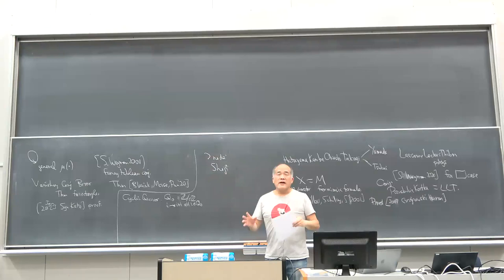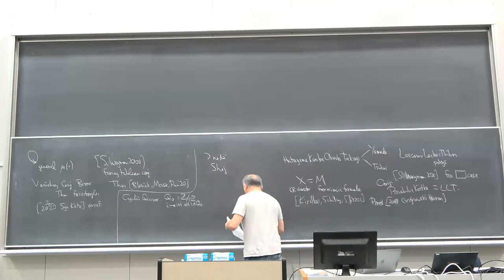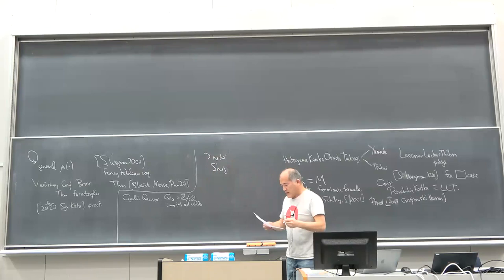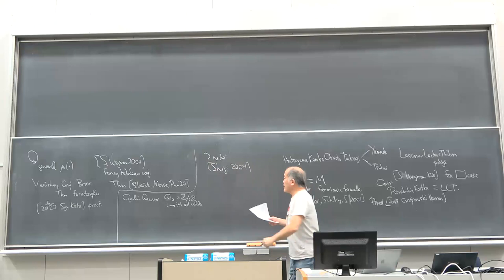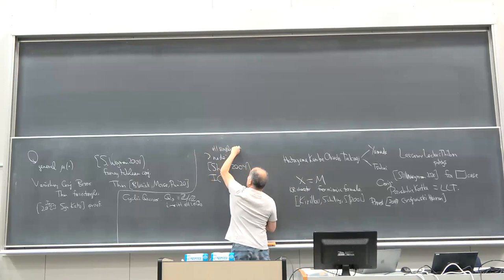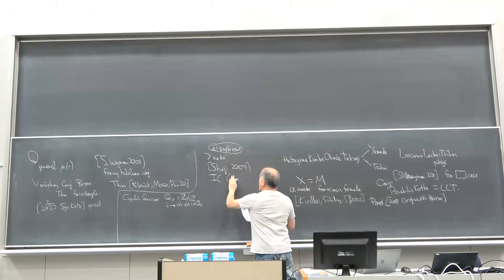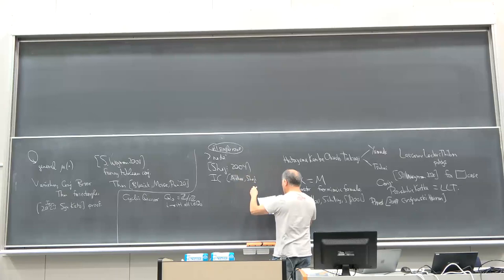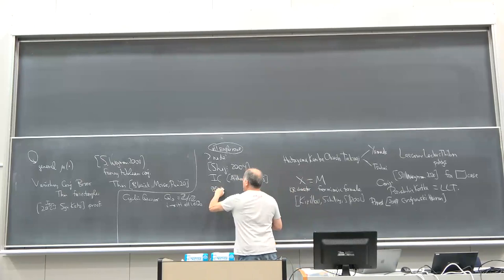For general R, these polynomials were defined by Finkelberg and Yonov — I talked about them at the beginning. They defined the cyclic quiver version. I should say these are all single rows, no partitions — just all single rows. He connected his polynomials with intersection cohomology, from around 2018. For general R, these polynomials were defined by Finkelberg and Yonov.